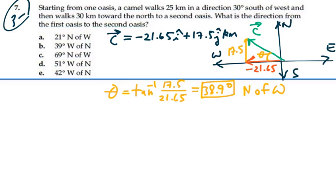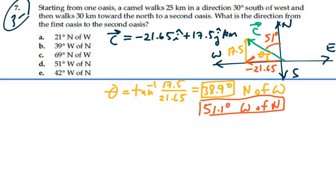West of north would be to look north first, and then go west of it. So 38.9 degrees — let's think about this complementary angle right here, which is going to be 51.1 degrees. And that would be west of north. So the same angle is 51.1 degrees west of north. If I look north first, and then go west of it, that would be the angle. And as we look at that, that is an option. So we choose answer D, 51 degrees west of north.